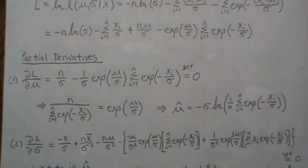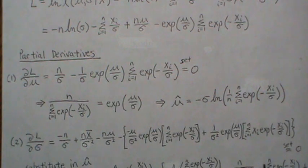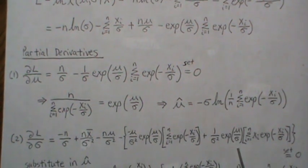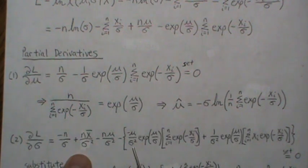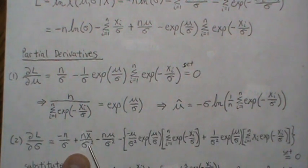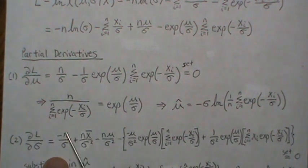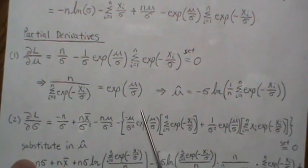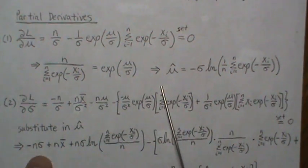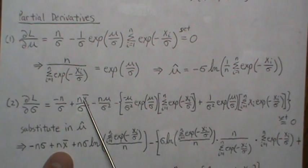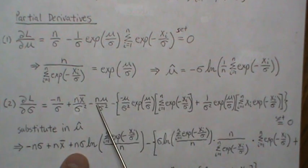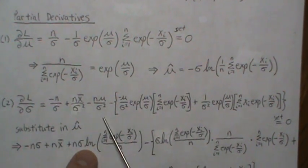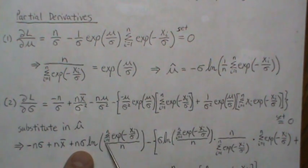Setting the partial derivative with respect to σ equal to zero, we multiply everything by σ² to clear the denominators. The x̄ term stays, and we substitute in the expression for μ. The μ terms then combine so the minus signs cancel, and we are left with a σ·log(…) term.